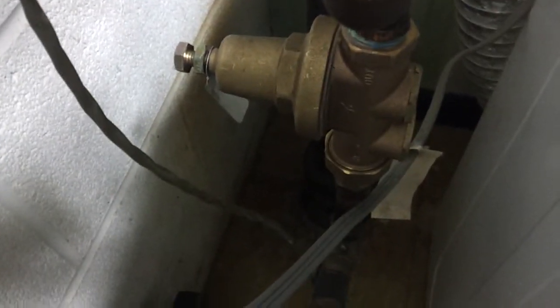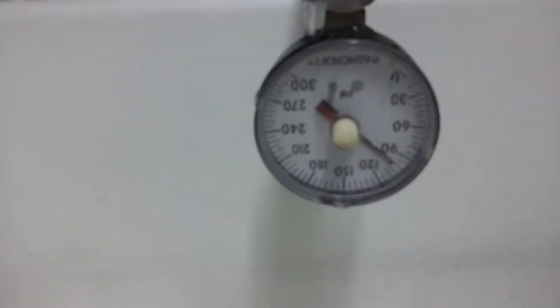Okay, we're going to make a video on a pressure regulator that's brand new. It's regulating but it's failing to lock up. What we got here is a gauge. We're reading about 100 pounds. I'm going to go flush a toilet and the gauge will drop.